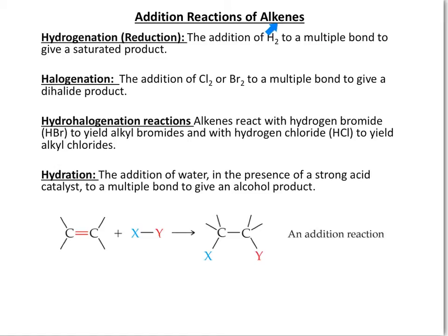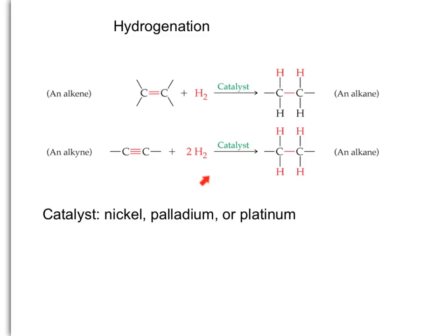The weak pi bond of an alkene can react with hydrogen in the presence of a catalyst, with a halogen such as chlorine or bromine, with a hydrogen halide such as hydrogen bromide or hydrogen chloride, and with water in the presence of a catalyst. For the family of alkynes, the same concept applies — breaking the double bond to produce single bonds only — except that because there are now two pi bonds to break, it will require double the number of moles of hydrogen gas.